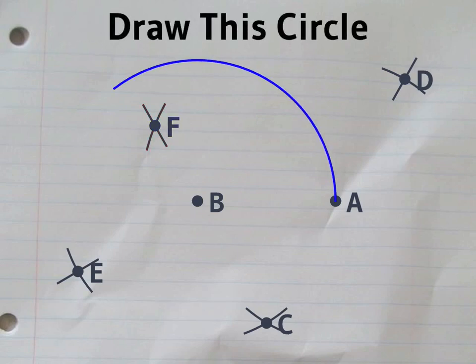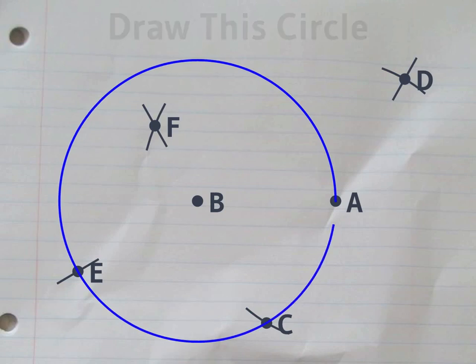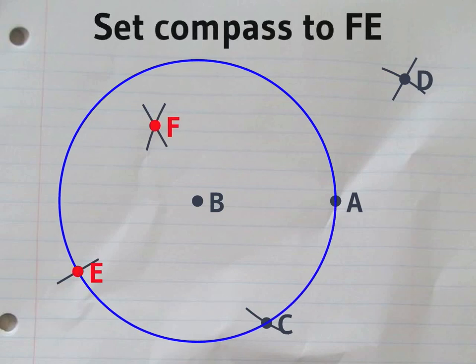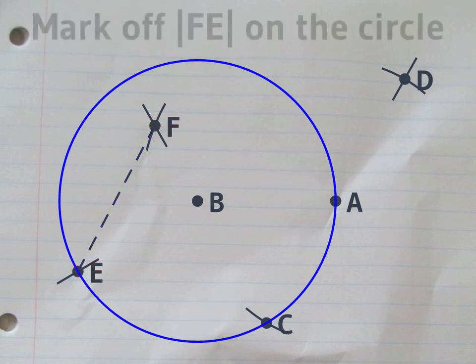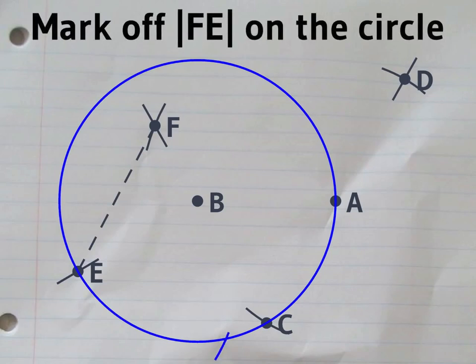We're almost done. It's time to draw the original circle again. Set your compass to the distance between E and F. That's exactly the edge length of the regular pentagon.